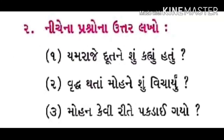હવે આપણે પ્રશ્ન બે જોઈશું. નીચેના પ્રશ્નોના ઉત્તર બે થી ત્રણ વાક્યમાં લખો, મિત્રો. નંબર એક: યમ્રાજે દૂતને શું કહ્યું હતું? — જ્યારે દૂત મોહનને લીધા વિના યમ્રાજ પાસે પાછો ફરે છે, ત્યારે યમ્રાજ ગુસ્સે થાય છે અને દૂતને કઈક કહે છે. એનો જવાબ તમને પાઠ્ય પુસ્તકમાં મળી રહેશે.